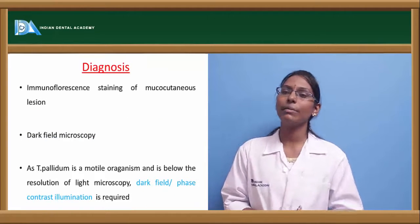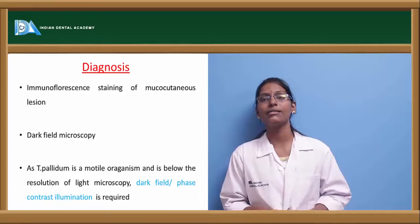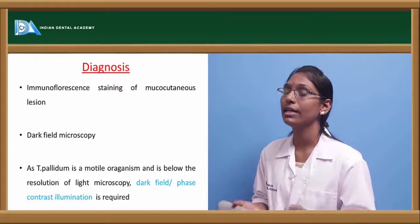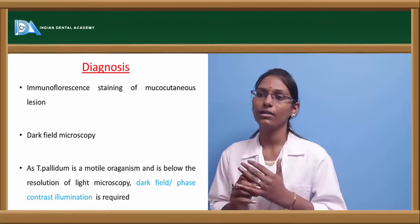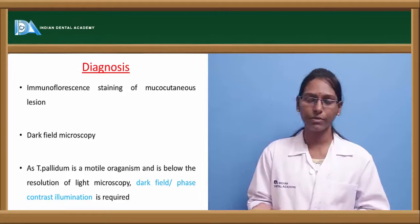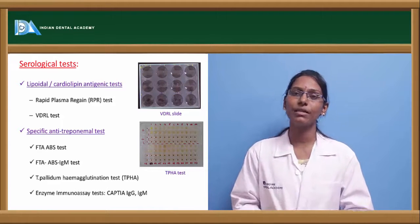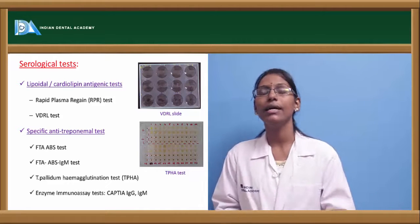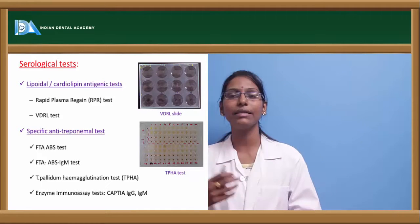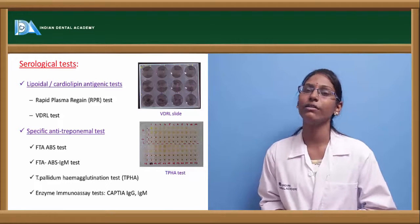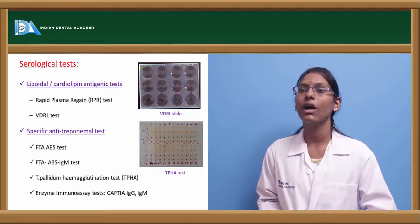Diagnosis of syphilis is primarily through clinical symptoms and history. Confirmatory diagnostic methods include immunofluorescent staining of mucocutaneous lesions and dark-field microscopy — since Treponema pallidum is highly motile and below the resolution of light microscopy, dark-field or phase contrast illumination microscopy is used. Serological tests include non-specific Treponema pallidum tests checking for lipoidal or cardiolipin antigen, such as the Rapid Plasma Reagin (RPR) or VDRL test, and specific anti-treponemal tests including FTA-ABS, Treponema pallidum hemagglutination test, and enzyme immunoassays.